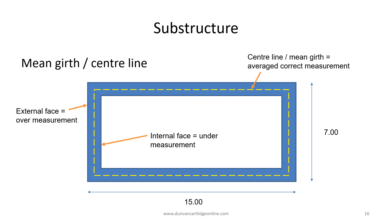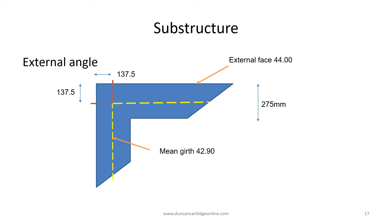NRM2 states that masonry should be measured on the centerline or mean girth. Looking at this drawing if we use the girth on the external face we are over measuring and if we use the girth on the internal face we are under measuring. It's necessary therefore to calculate the centerline as shown on this page in dotted yellow. The mean girth can be calculated from the external or internal dimensions and is based on the number of external angles. When working from the external face deduct twice times, half times the thickness of the wall for each external angle. When working from the inside face add twice times, half times the thickness for each external angle.